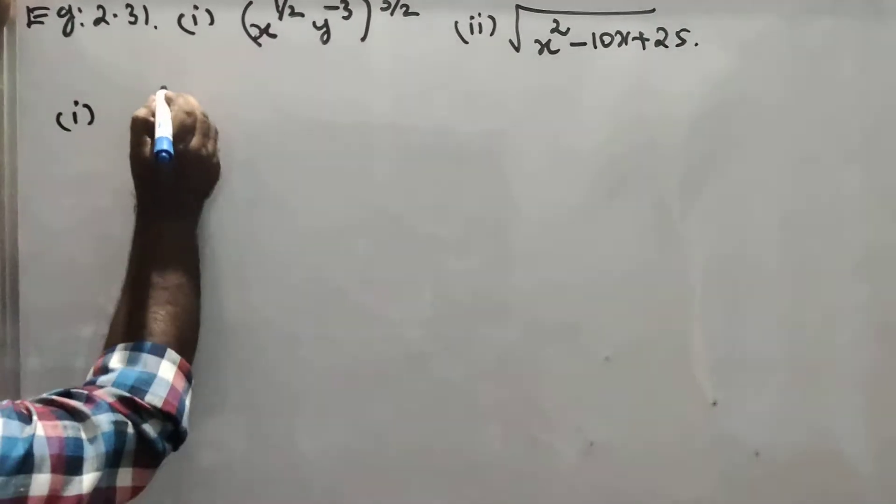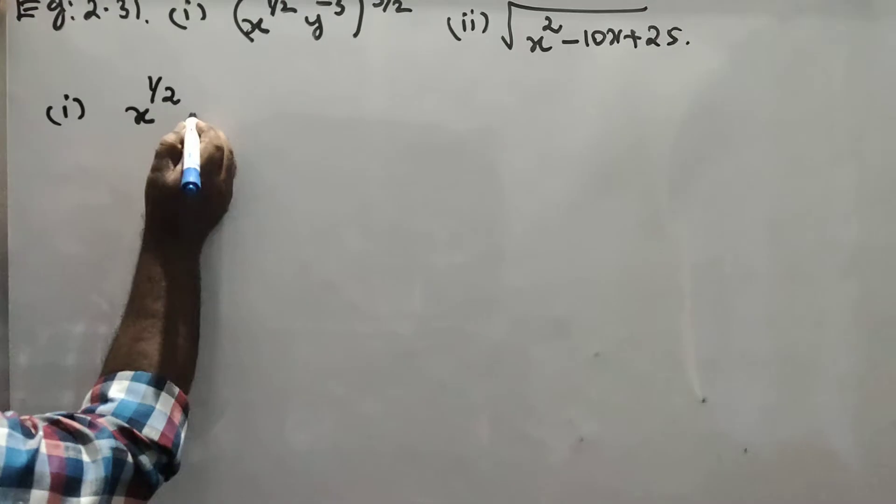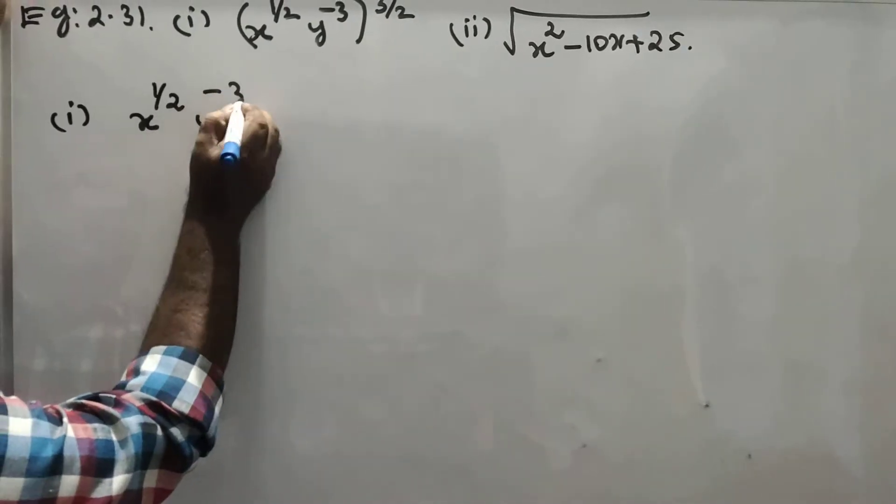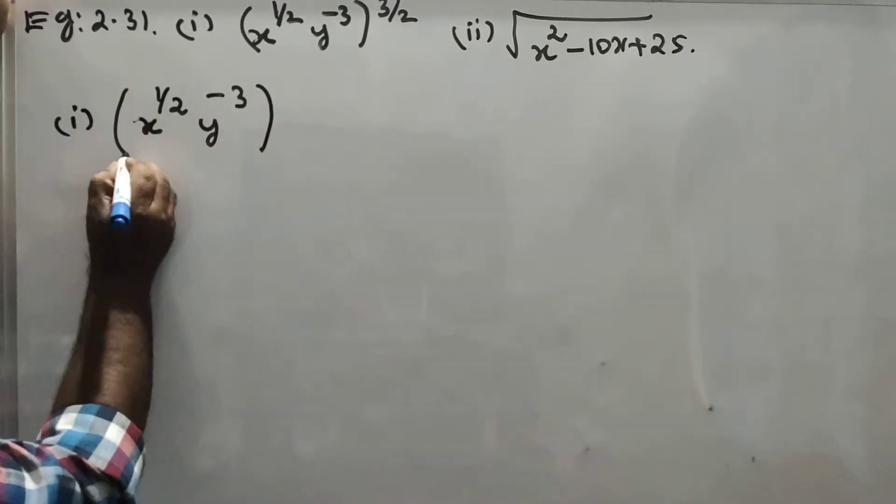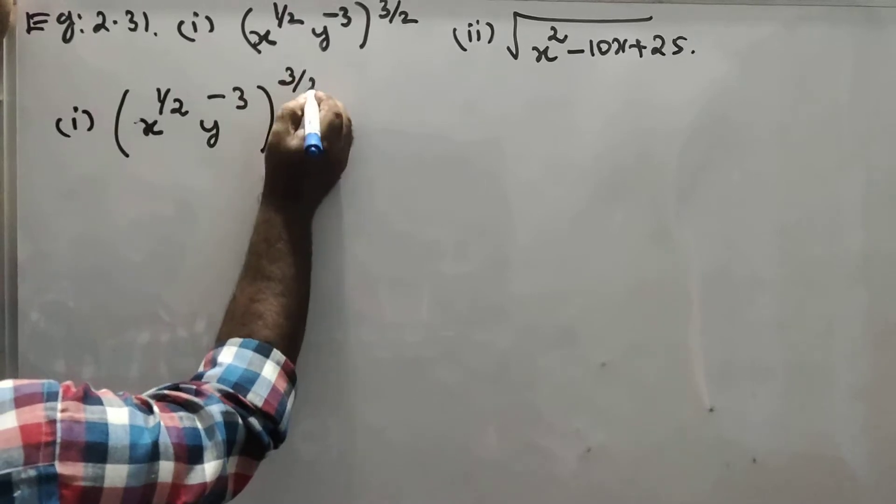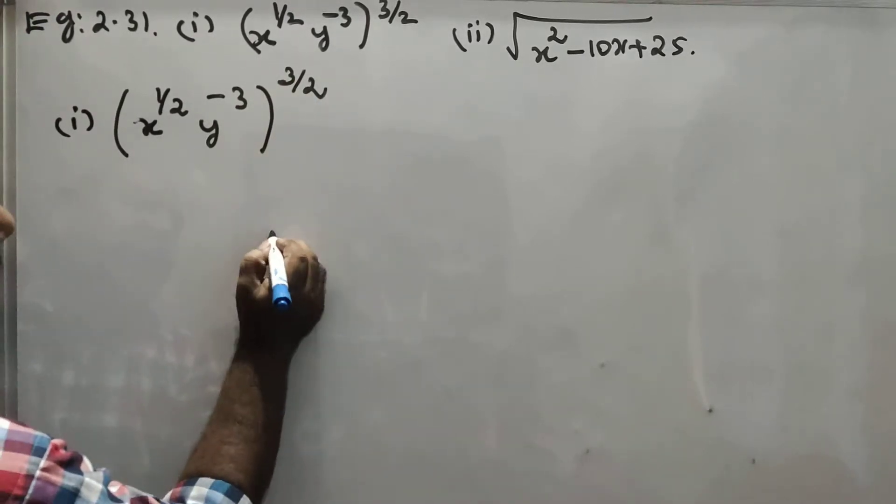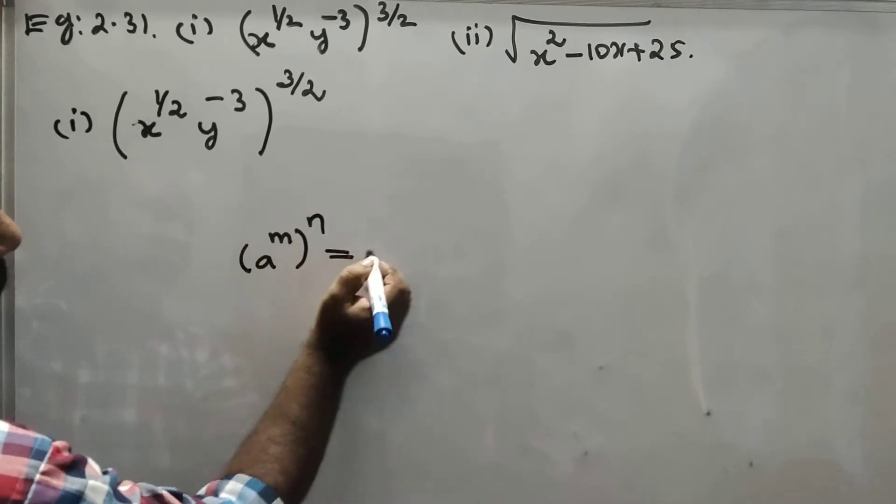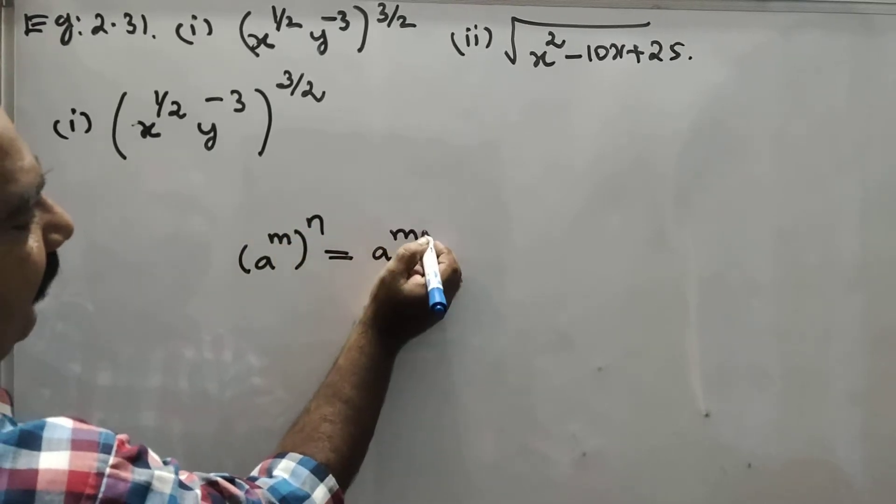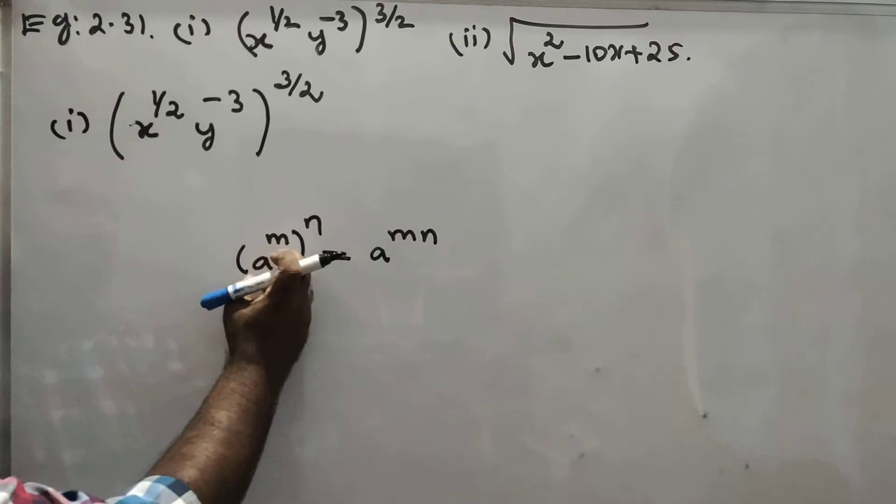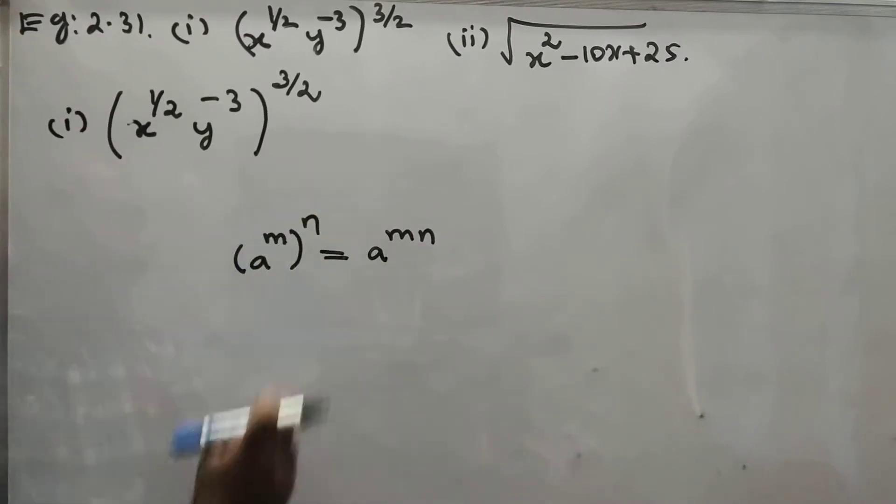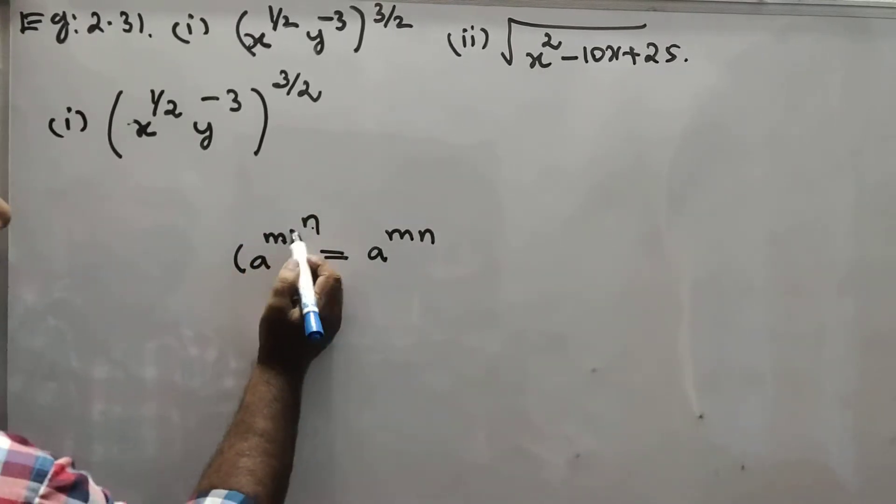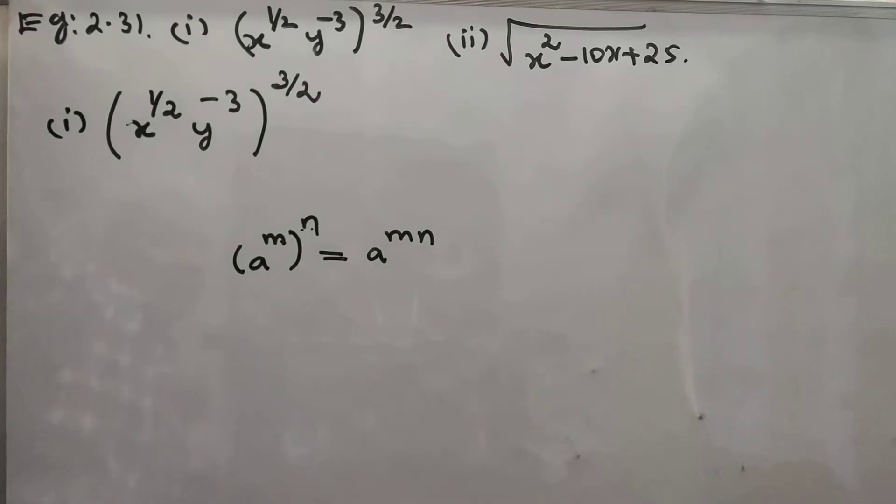x power 1 by 2 into y power minus 3, the whole power 3 by 2. Using the formula: a power m, the whole power n, equals a power m into n. We multiply the powers.